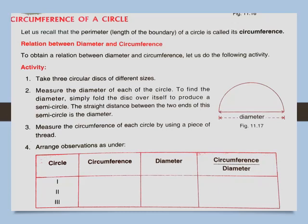Let's do an activity to find out the relation between diameter and circumference. Take three circular discs of different sizes and measure the diameter of each. To find the diameter, simply fold the disc over itself to produce a semicircle — the straight-line distance between the two endpoints of the semicircle is the diameter. Then measure the circumference of each circle using a piece of thread to measure the total length of the boundary.